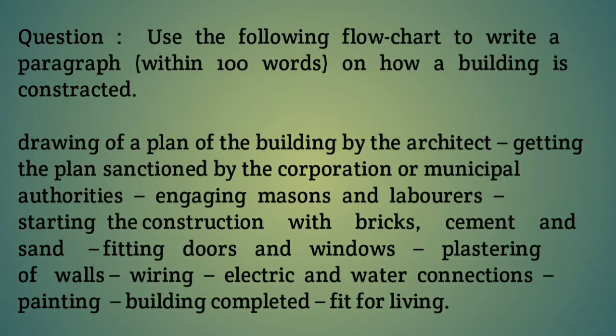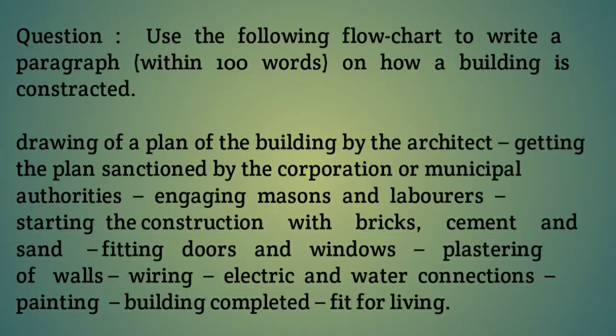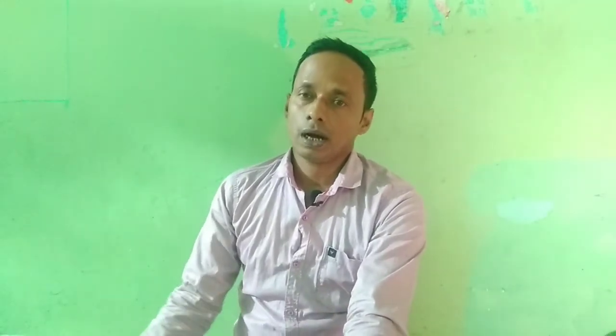The question is: use the following flowchart to write a paragraph within 100 words on how a building is constructed. This is a flowchart describing a process. Describing a process means the description of a continued set of actions to reach some result.